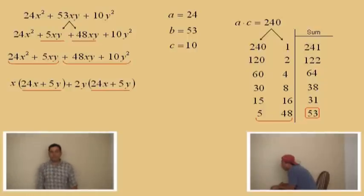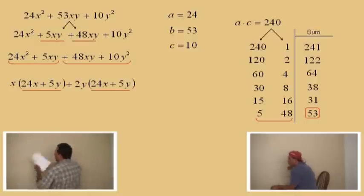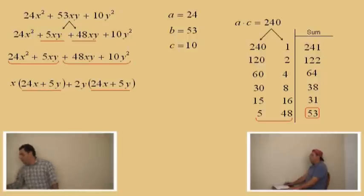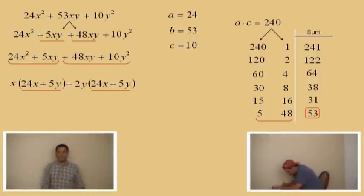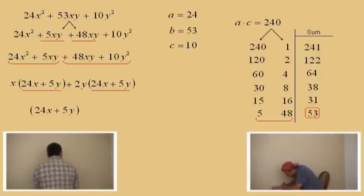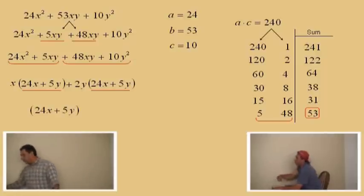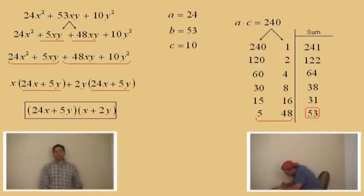So up to this point, we notice each group has a 24x plus 5y in it. So what do we do, Charlie? We're going to yank those out. We're going to take them out there. 24x plus 5y. And so we take those out, we put it in front. What's left over, Charlie? X plus 2y. It's the x plus 2y. Very nice. And all you've got to do is circle your answer and you're done.